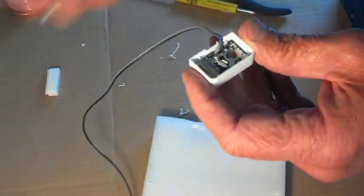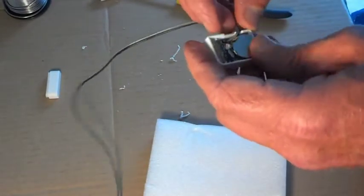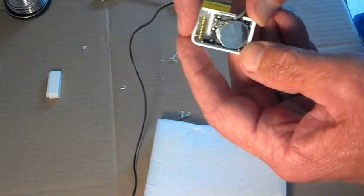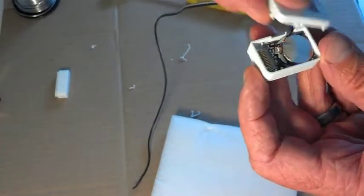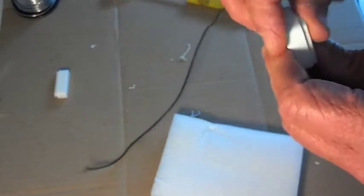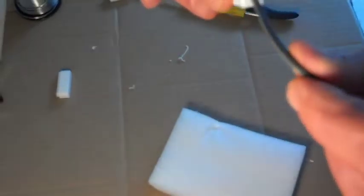Okay. So the circuit board's in place. All we have to do then is simply put our battery back in, like so. And then the cover. And there we go.